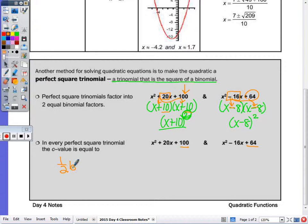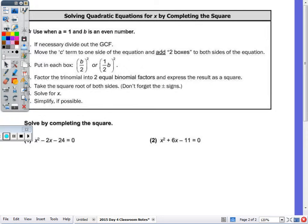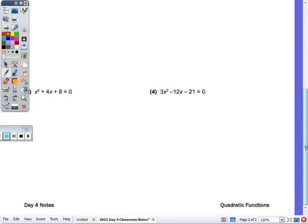So if I check, does 100 equal half of 20 squared? Half of 20 is 10, and 10 squared is 100. That checks. Does 64 equal half of 16 squared? Half of 16 is 8, and 8 squared is 64. So that checks. So the steps are at the top of the back page. We're going to look at four examples. We're going to use the method of completing the square when your a value is 1. And remember, a is that number in front of the x squared. If you don't have an a value of 1, such as in example number 3, step number 1 says to divide out the GCF. So all these terms are divisible by 3. I end up with x² minus 4x minus 7 equals 0.